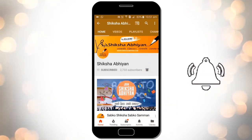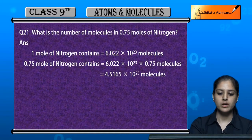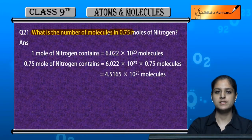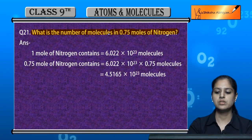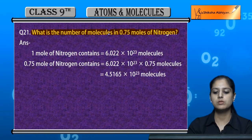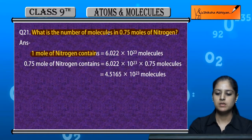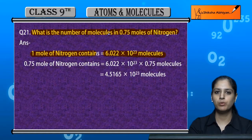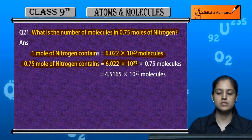Question 21: What is the number of molecules in 0.75 moles of nitrogen? In 0.75 moles of nitrogen, since 1 mole of nitrogen contains Avogadro's number of molecules, 0.75 moles will contain Avogadro's number multiplied by 0.75 molecules.